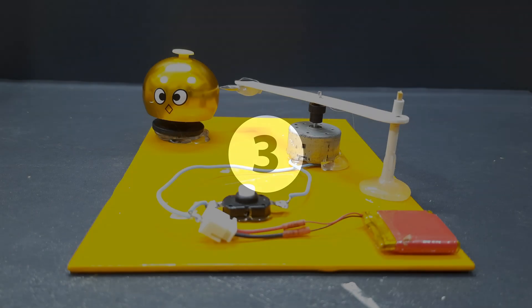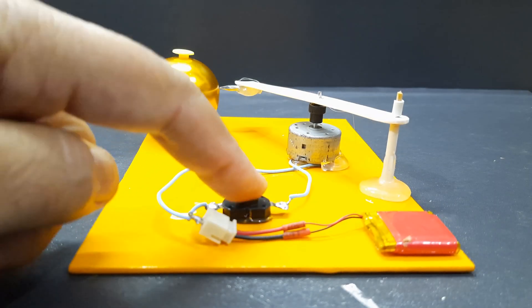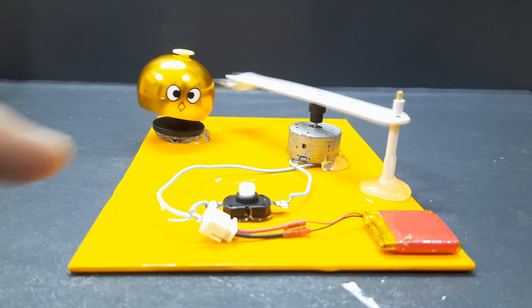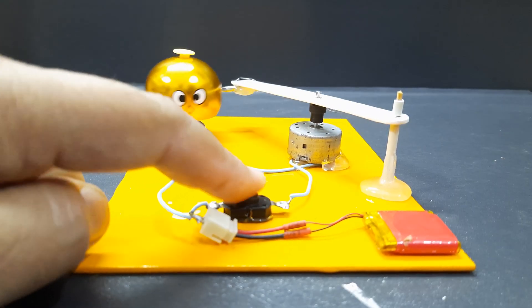Number 3. In this project, we demonstrate how a basic DC motor, powered by a 3.7-volt battery, can be used to create a functional electrical bell.